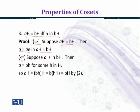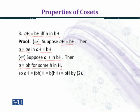Now we establish the converse implication. We are assuming that A is in BH and we have to prove that AH equals BH. If A is in BH, then we can write A equal to BH' for some H' in H. Since H is a subgroup of G, when we multiply an element of H with H, we get H. So finally we shall obtain BH, and we are done.